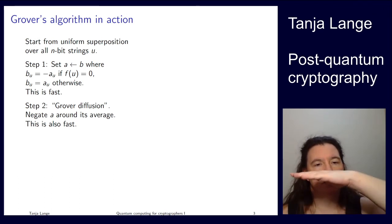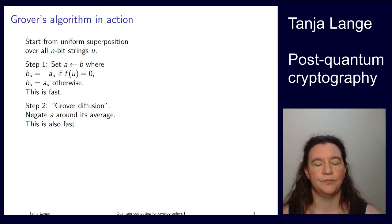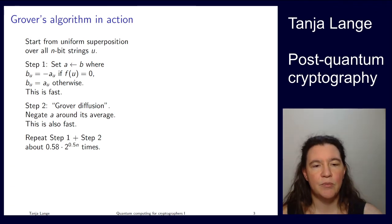Then what Grover is doing is just a whole lot of these step one, step two, step one, step two. And then at some point he stops. The stopping point is roughly at the square root of the search space. So the square root of the search space means 2^(0.5n), and then there is a scaling factor of 0.58.